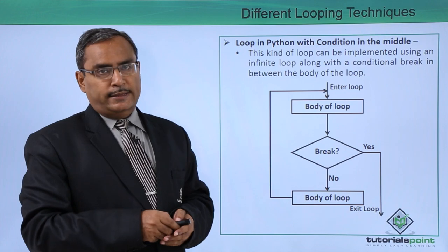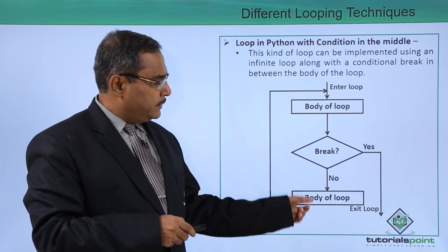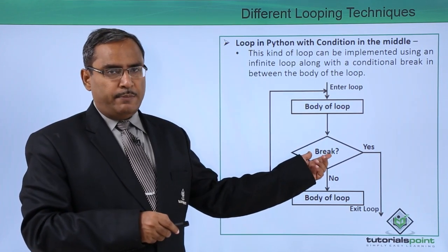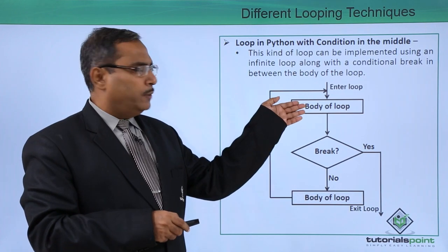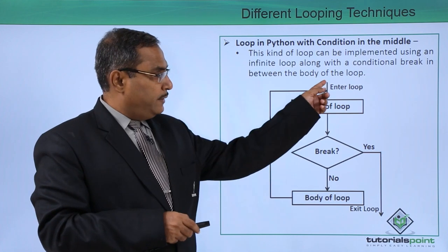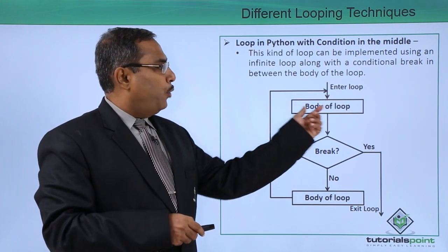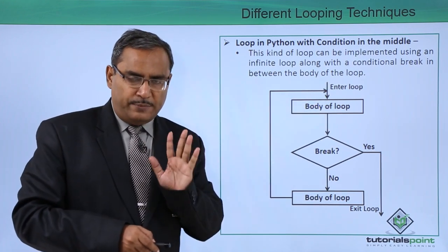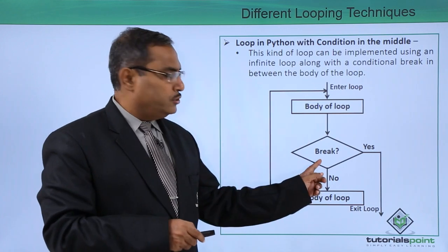Loop in Python with condition in the middle. Look at here, this is our condition which is at the middle and here we are having the body of the loop prior to that and the body of the loop after to that. When you see entering into the loop, the body of the loop at least for the first time will get executed. Then the condition will be checked.